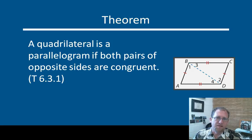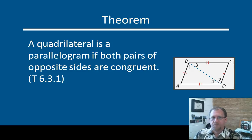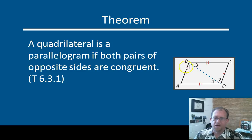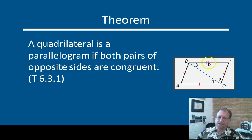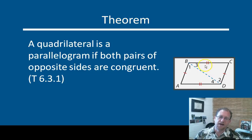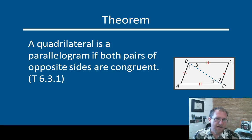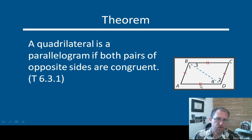One theorem that will help you prove that something is a parallelogram is this one: a quadrilateral is a parallelogram if both pairs of opposite sides are congruent. So if you can demonstrate that AB is congruent to DC, you've come halfway to this particular theorem's proof, and then you would also need to demonstrate that the other sides are congruent as well. If you can show that these two sides are congruent and these two sides are congruent, you have by definition a parallelogram. You can't have two opposite pairs of congruent sides without the shape being a parallelogram.